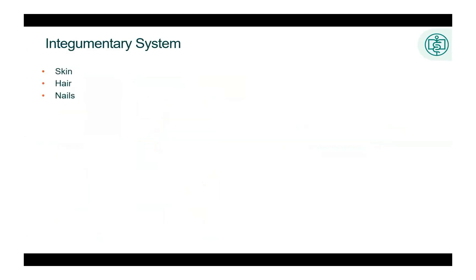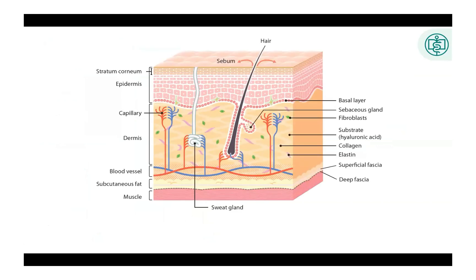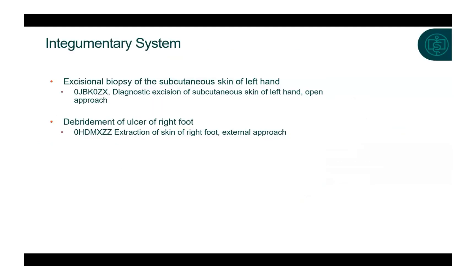The integumentary system consists of the skin, hair, and nails. There are only a few procedures pertaining to the hair, so we'll focus on the skin and nails. These structures work together to provide protection from injury, fluid loss, and outside elements such as bacteria and viruses. They also provide body temperature regulation, fluid balance, and sensation. There are two main layers that make up the human skin, the dermis and the epidermis. Below the dermis is the subcutaneous layer. The subcutaneous layer is just beneath the skin and is composed of fatty tissue.